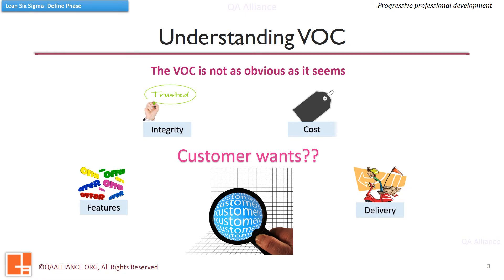Features — what functionalities and features does the customer want? Integrity — does our customer trust us? Cost — does the customer see value for the cost he has to bear? Delivery — is our process able to meet the deadlines?